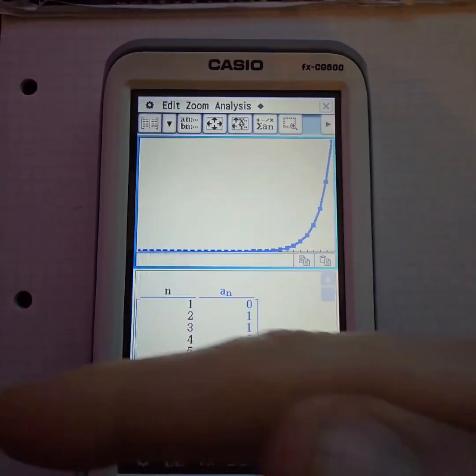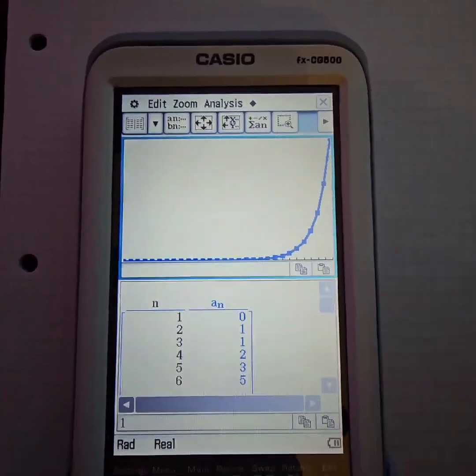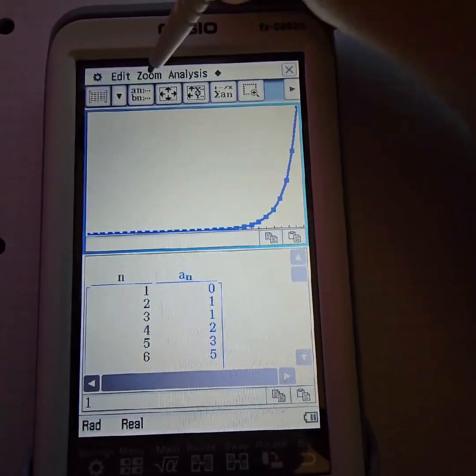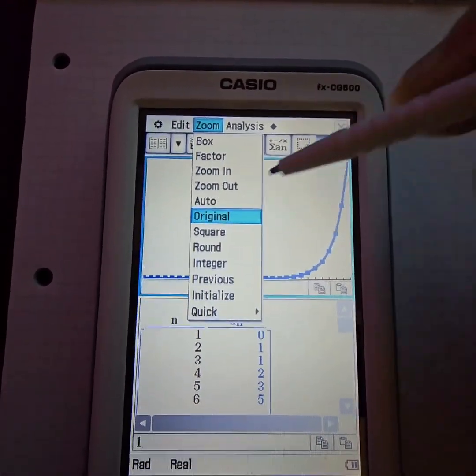And as you can see, we get this nice smooth curve. If you prefer the original, go back to Zoom and then select Original.